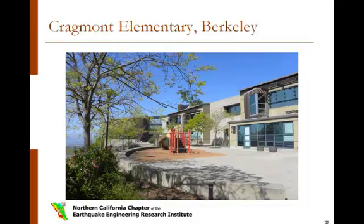Progress has been made on the seismic retrofit or replacement of vulnerable K-12 school buildings. California Assembly Bill AB 300 created a list of potentially dangerous school buildings. State and local bond measures have provided some support for local school districts, including West Contra Costa, Berkeley, Albany, and Piedmont. However, evaluation and retrofit or replacement remains a voluntary effort. This is a school that was constructed to replace an older, vulnerable school located in the near-field zone of the Hayward Fault.